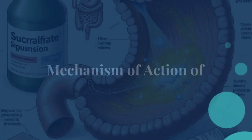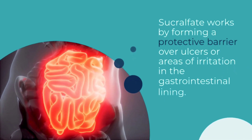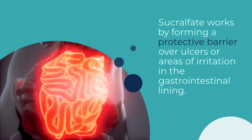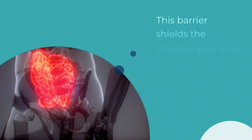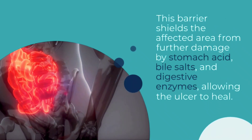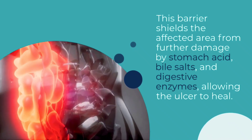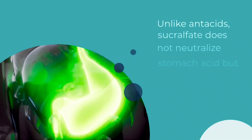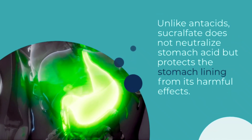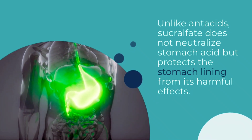Next, the mechanism of action of sucralfate suspension. Sucralfate works by forming a protective barrier over ulcers or areas of irritation in the gastrointestinal lining. This barrier shields the affected area from further damage by stomach acid, bile salts, and digestive enzymes, allowing the ulcer to heal. Unlike antacids, sucralfate does not neutralize stomach acid but protects the stomach lining from its harmful effects.